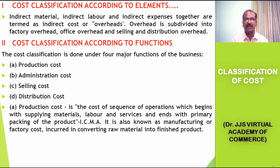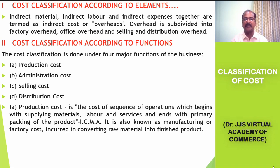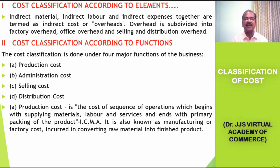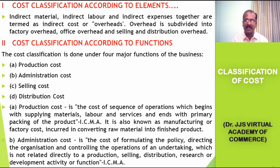Production cost is the cost of a sequence of operations which begins with supplying materials, labor, and services, and ends with the primary packing of the product, according to ICMA. It is also known as manufacturing or factory cost, incurred in converting raw material into finished product. The expenses incurred in the conversion of raw material into finished product constitute production cost.